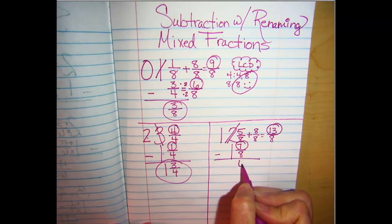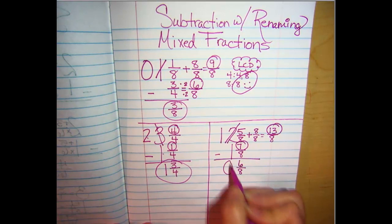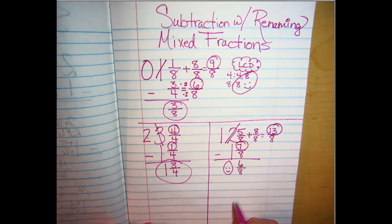Now am I able to do 13 minus 7? So I have 6/8 and 1 minus 1 is zero, so I've got nothing here. It's okay. Am I done?